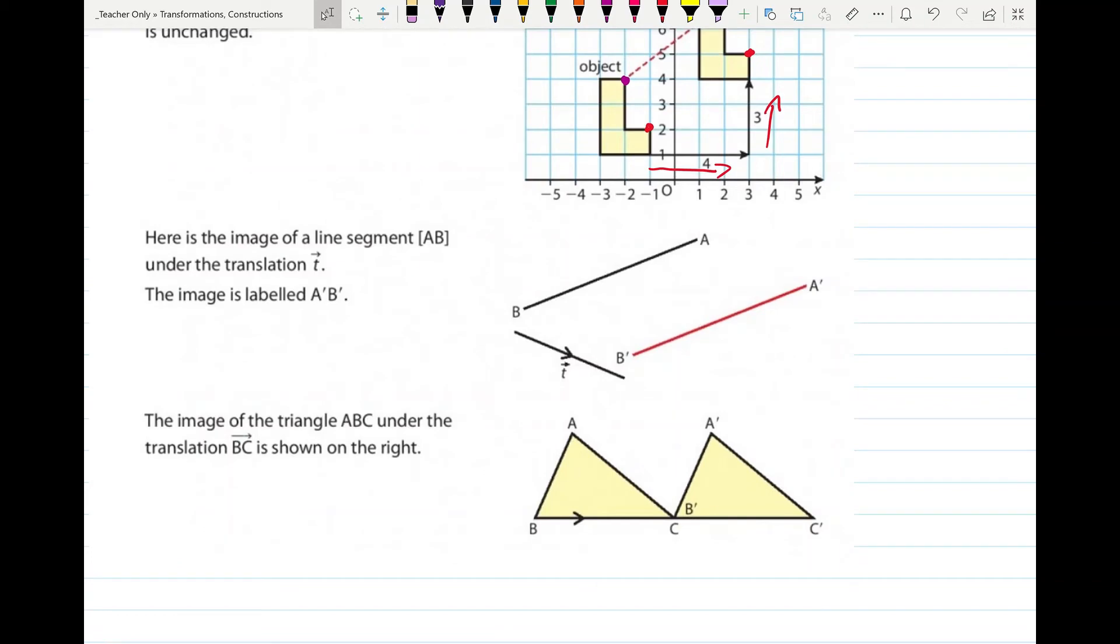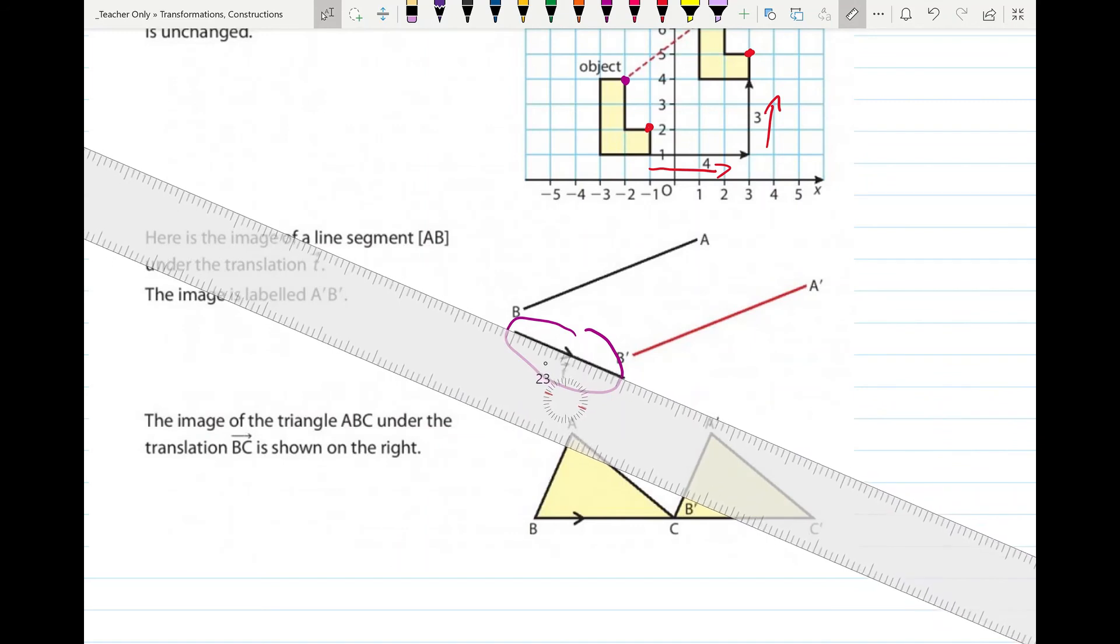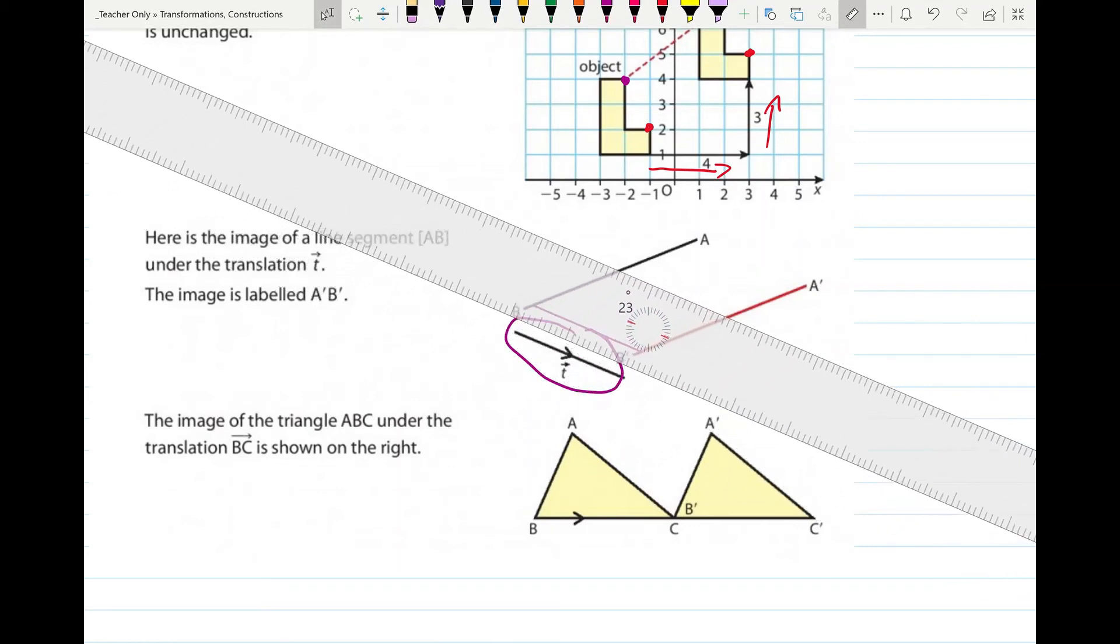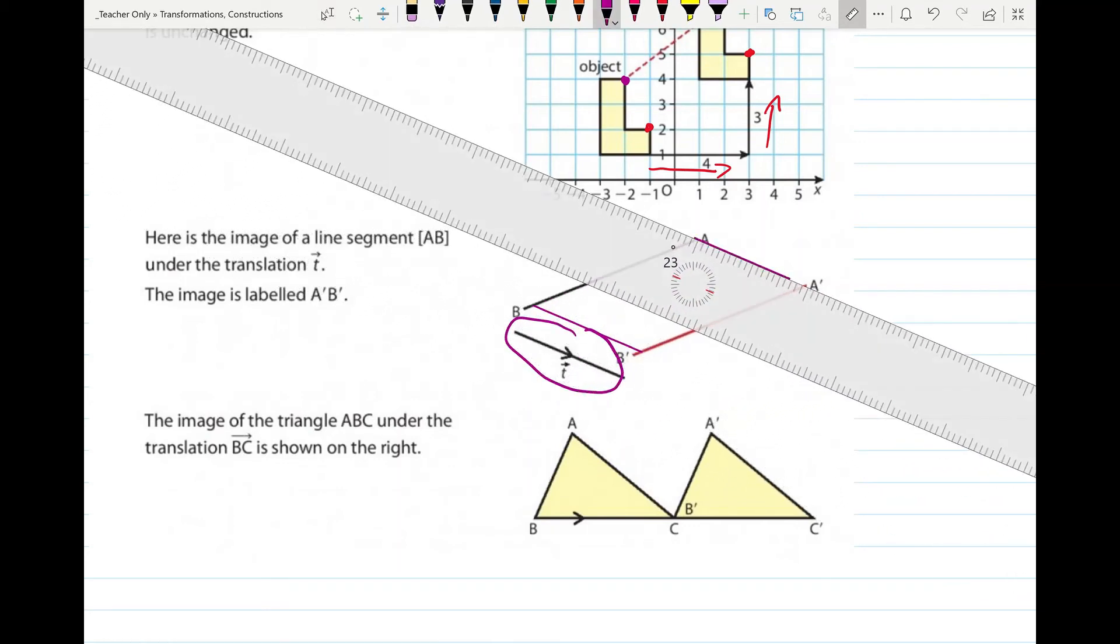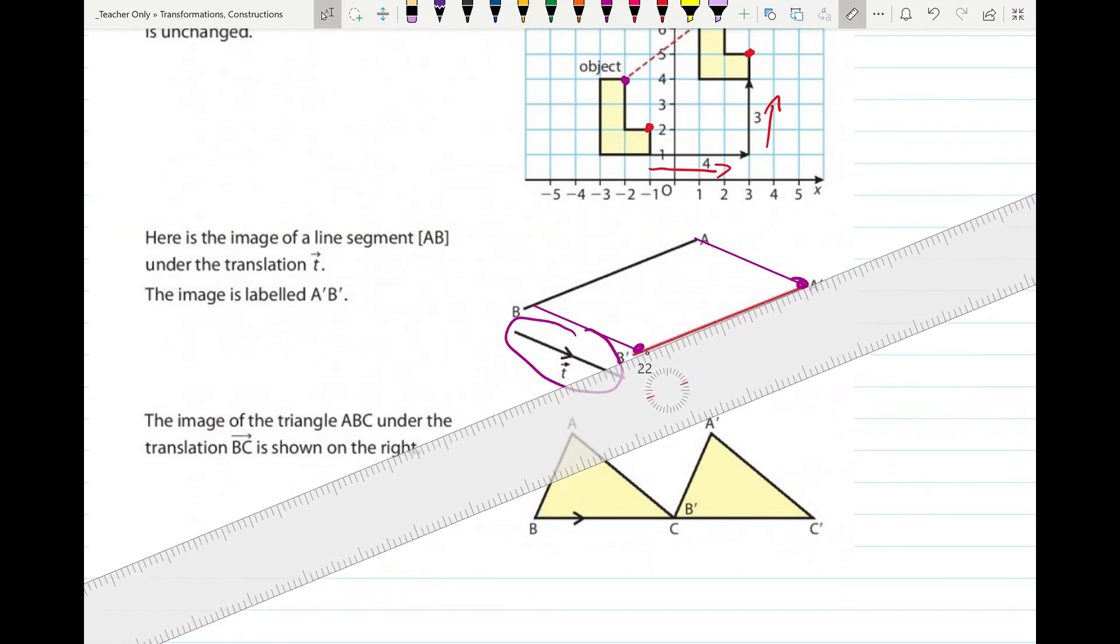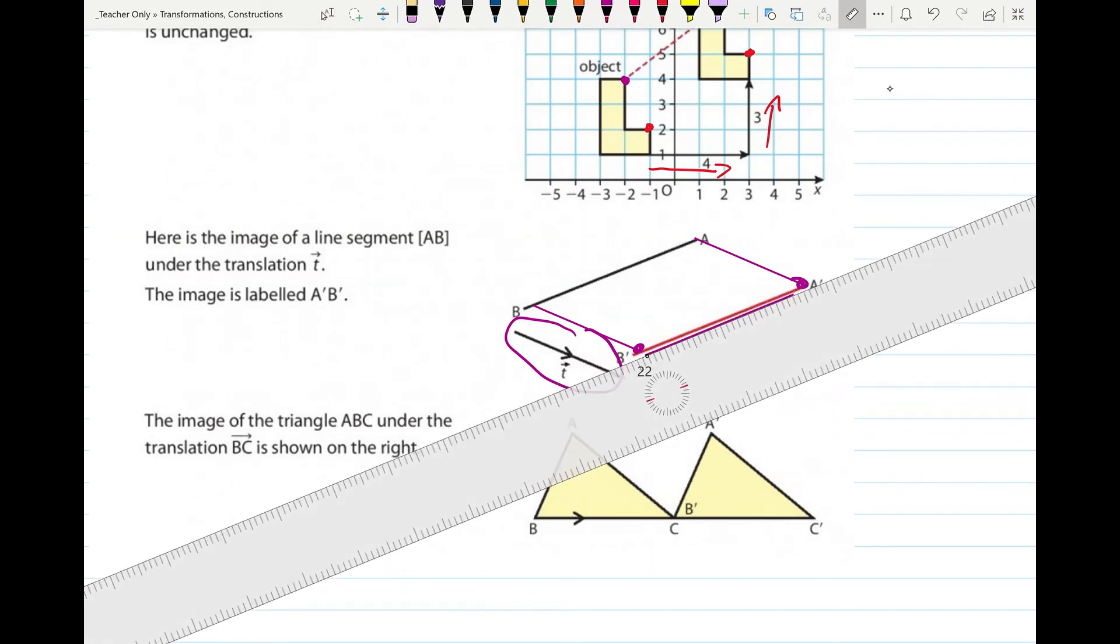Another way of describing it will be here. There's a line segment and it is moved under the translation T. The image is labeled A dash B dash. So they have a length of a line here. It is labeled T. So every point on that line segment is moved T distance and in that slope. So you would get your ruler and you would get it parallel. And you'd come along here and you'd move point B. And then you'd keep it parallel and you'd come up and you'd move point A. And then once you have those two points moved up, you can just join them up to get your new image.